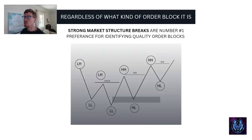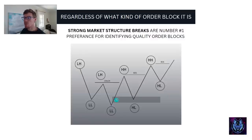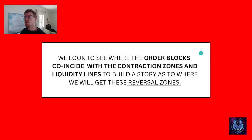Regardless of what kind of order block it is, the main thing we're looking for is strong market structure breaks to identify quality order blocks. We get lower highs, lower lows, and at a certain point a higher high — our change in character — which is accompanied by displacement of price. That is where you will find an order block. You can also look for indecision candles and engulfing candles. At every break of structure we usually find an order block. We look to see whether order blocks coincide with the contraction zone and liquidity lines to build a story of where we will get these reversal zones.